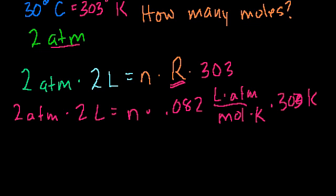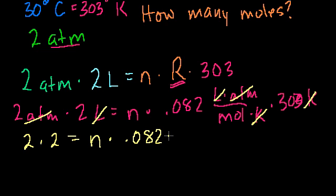So let me rewrite our whole equation. So I have 2 atmospheres times 2 liters equals n times 0.082 liter atmospheres per mole Kelvin times 303 degrees Kelvin. Let's see what we can do. When you do dimensional analysis, you can treat units like numbers. The atmospheres cancel out, liters cancel out, Kelvin cancels out.